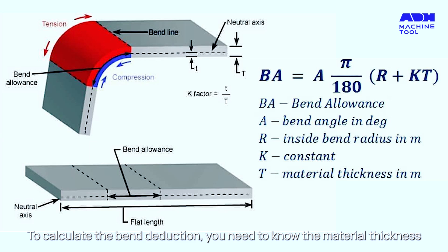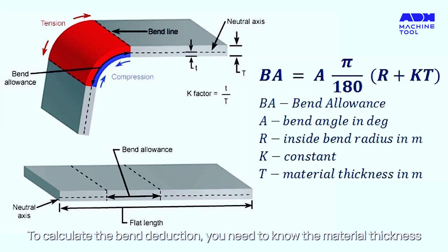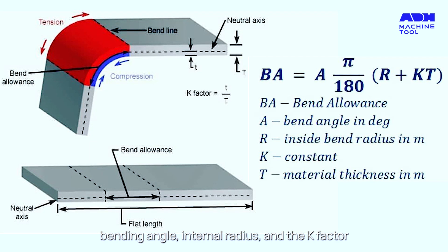To calculate the bend deduction you need to know the material thickness, bending angle, internal radius and the K factor.